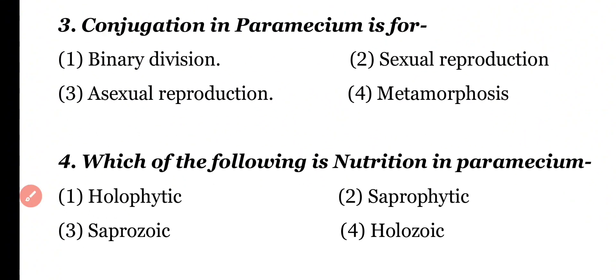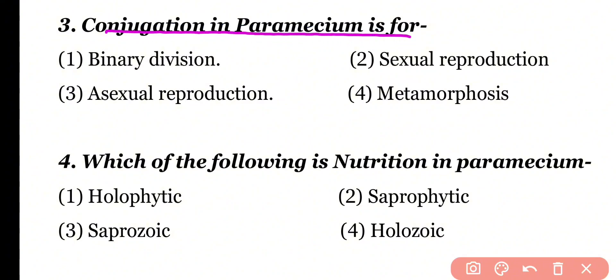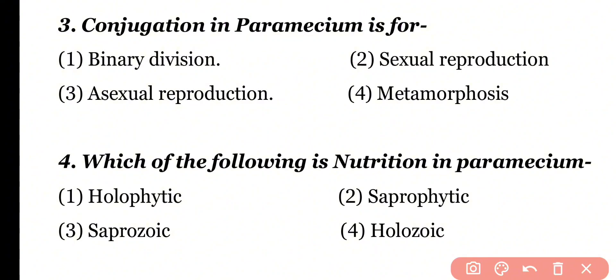Question number 3: Conjugation in Paramecium is meant for — binary division, sexual reproduction, asexual reproduction, or metamorphosis? Correct answer is option 2. Conjugation is a means of sexual reproduction present in Paramecium.